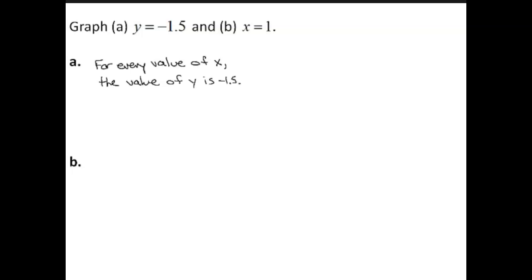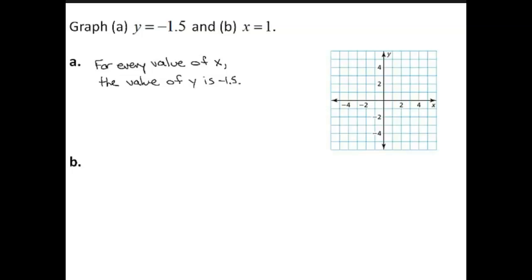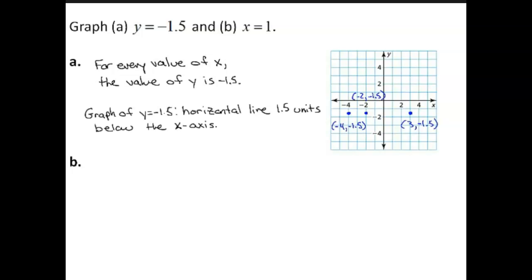Part A. For every value of x, the value of y is negative 1 and 5 tenths. For instance, when x is negative 4, y is negative 1 and 5 tenths. When x is negative 2, y is negative 1 and 5 tenths. And when x is 3, y is negative 1 and 5 tenths. So the graph of y equals negative 1 and 5 tenths is a horizontal line 1 and 5 tenths units below the x-axis.